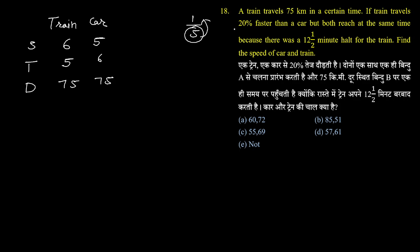Now, they reached at the same time, but there was a difference because the train had a 12.5 minute halt. So the time difference between them is 1 unit in the 5:6 ratio, which equals 25 by 2.